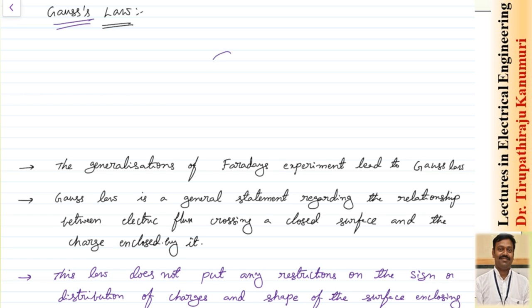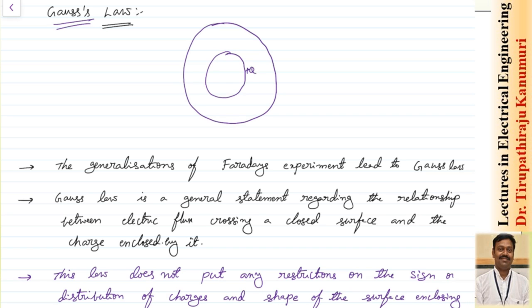What did Faraday do? He took one sphere in the laboratory and applied a positive charge to it, giving a positive test charge of plus Q. He then placed one more sphere above this, so the small sphere is kept inside a big sphere. He observed that due to the charge on the inner sphere, automatically minus Q is induced on the inner side of the outer sphere, and plus Q is induced on the outer side of the outer sphere.